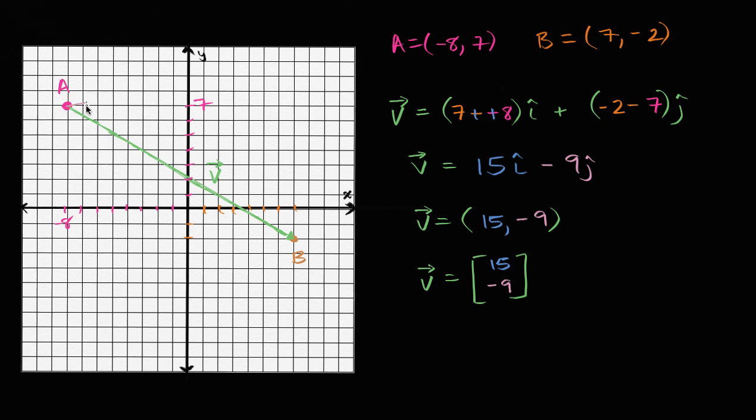And we can see that over here. 15i is going to be a vector that's 15 times bigger than the unit vector in the horizontal direction. So one, two, three, four, five, six, seven, eight, nine, 10, 11, 12, 13, 14, 15. So this right over here is the vector 15i. That right over there is the vector 15i.